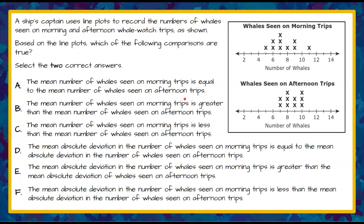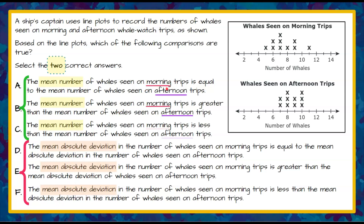Go ahead and feel free to use a calculator, but pause the video now and come back when you have picked your two correct answers to check your work. Welcome back. We want two of these correct answers. The first three are all talking about the mean number of whales seen on the morning trips and comparing them to each other, and the second set of three are talking about mean absolute deviation — all comparing morning to afternoon.